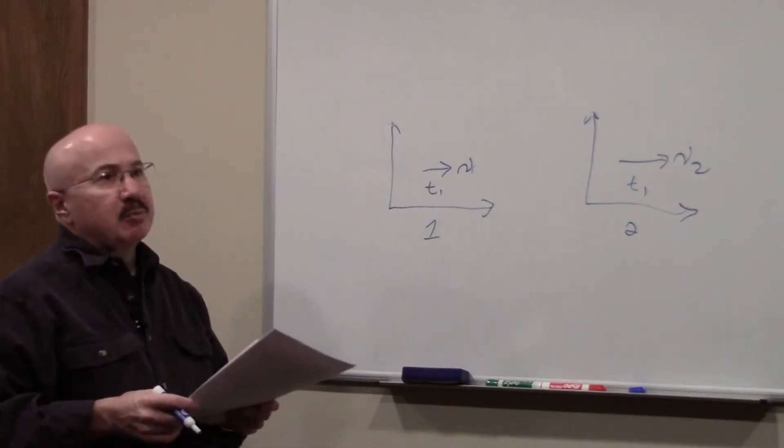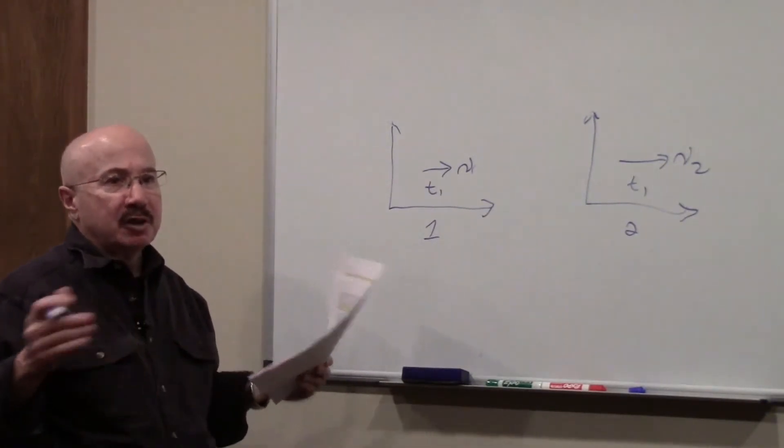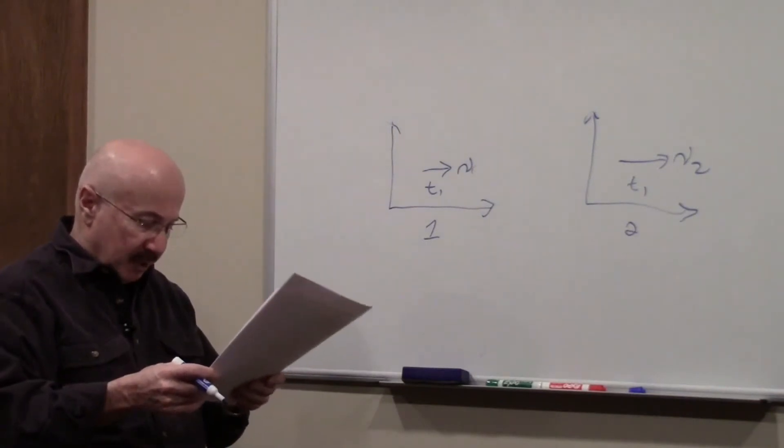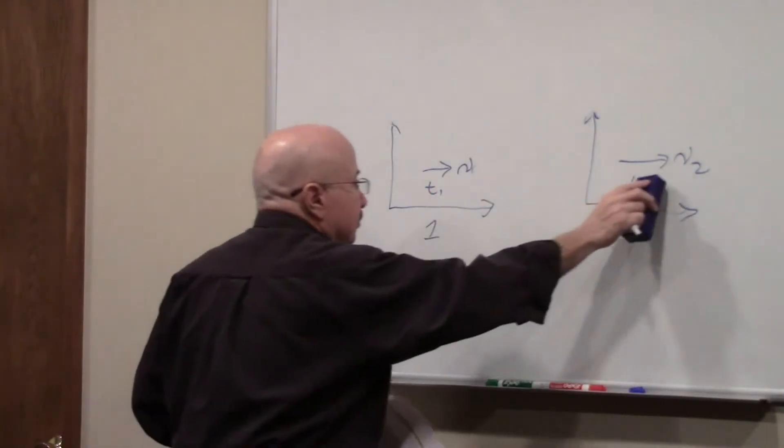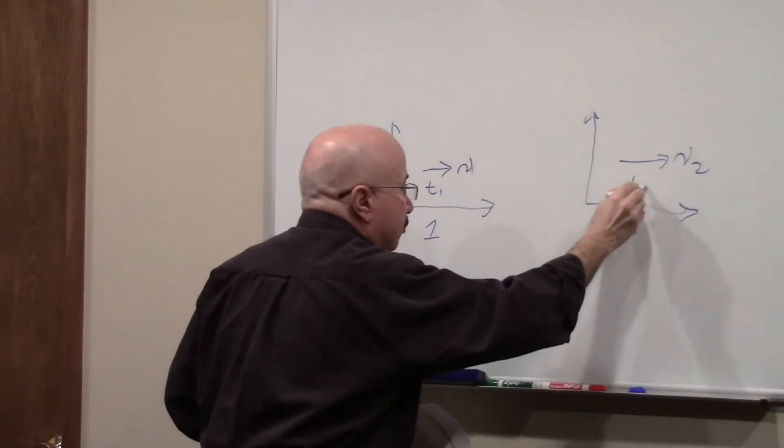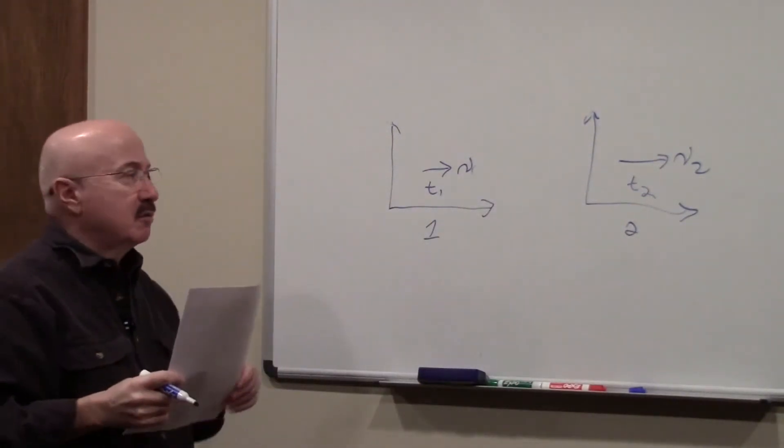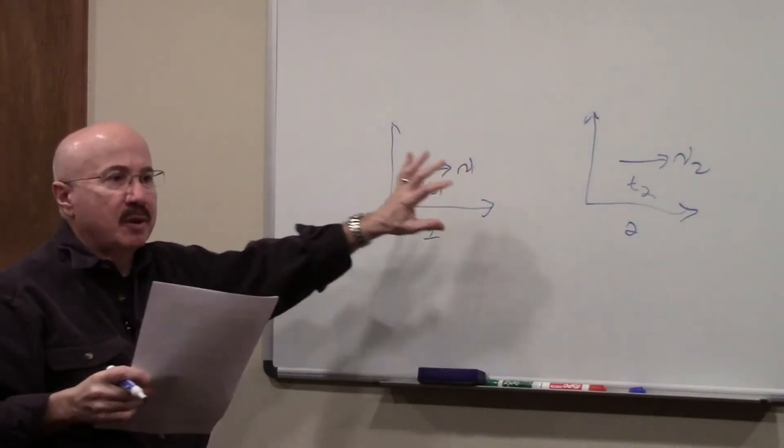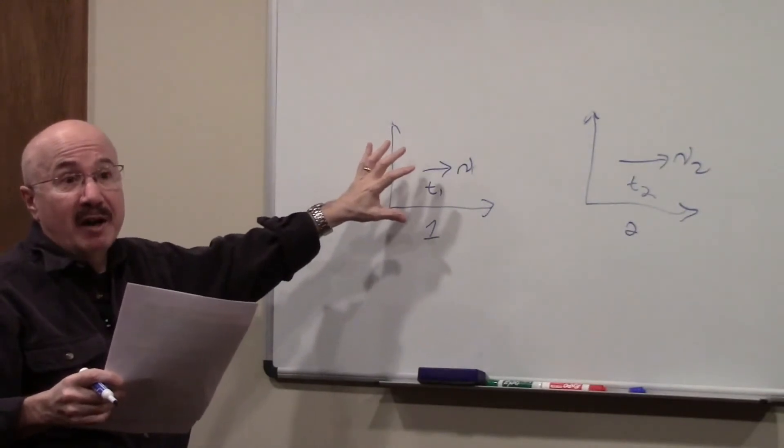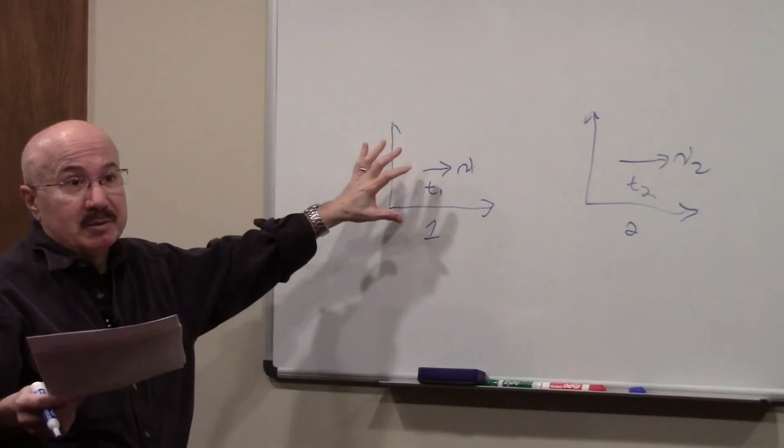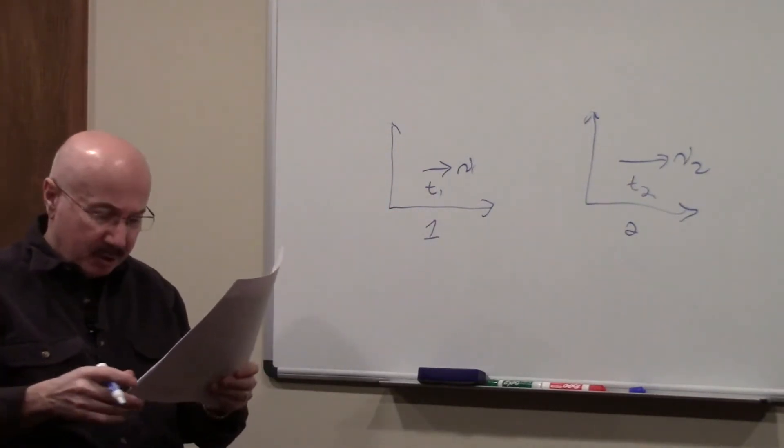However, it proved totally inadequate when we were talking about the theory of relativity, the special theory of relativity. So Einstein had to redevelop what's known as now the Lorentz transformation when you're dealing with frames of motion that are moving at a constant velocity, but the velocities might be different, and they're moving perhaps relatively at a very high velocity, such as close to the speed of light.